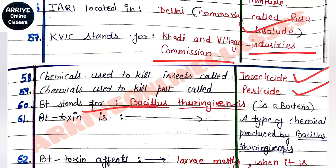BT stands for Bacillus thuringiensis — B for Bacillus and T for thuringiensis. This is the name of a bacterium. BT toxin is a type of chemical produced by Bacillus thuringiensis bacteria.